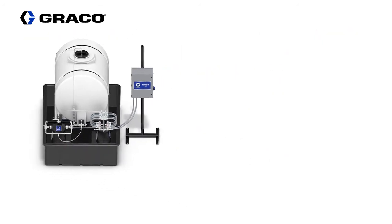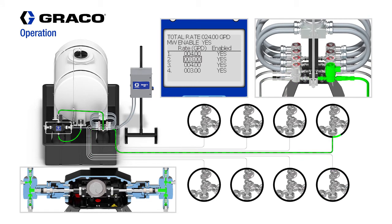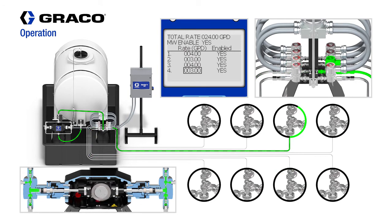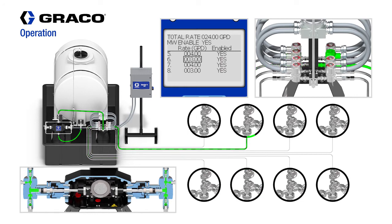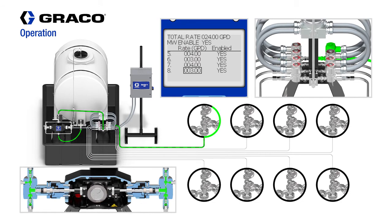This demonstration shows an 8-point injection configuration. Using the Harrier Plus MPI, you can enable or disable individual solenoid valves directly on the controller or remotely using the Harrier Plus web portal. From the same screen, you can set the desired flow rates for each injection line. If a line is enabled, Harrier Plus MPI will send a signal to the corresponding solenoid valve and will dispense the desired amount of chemical in that line.